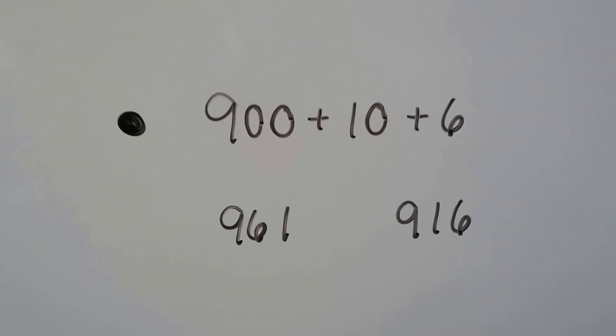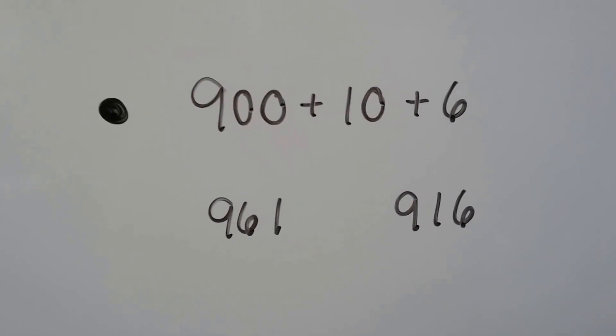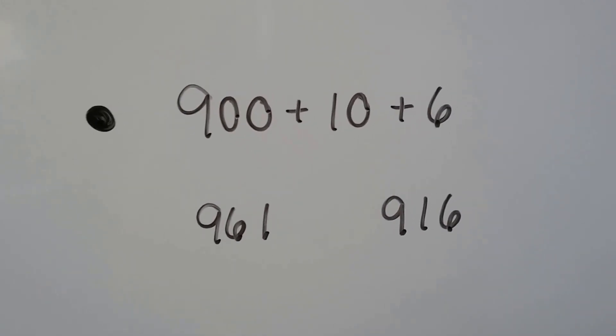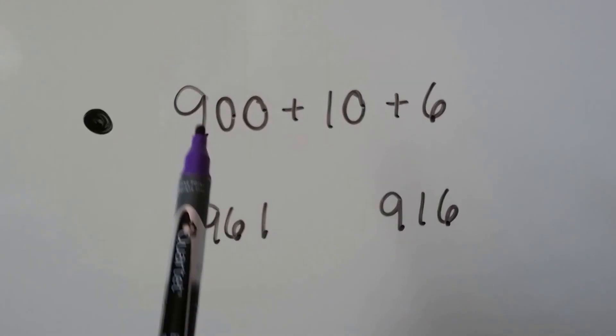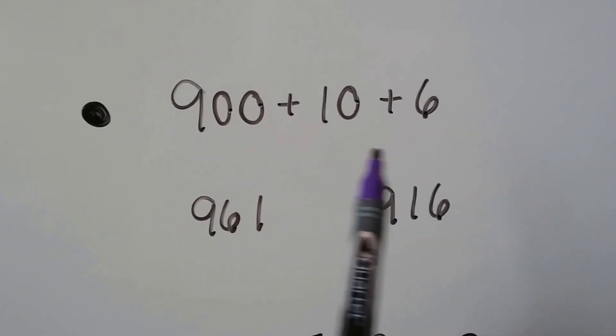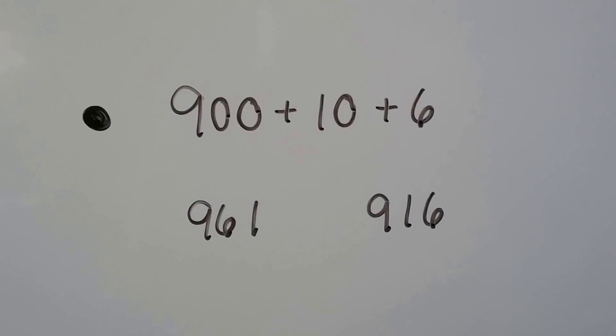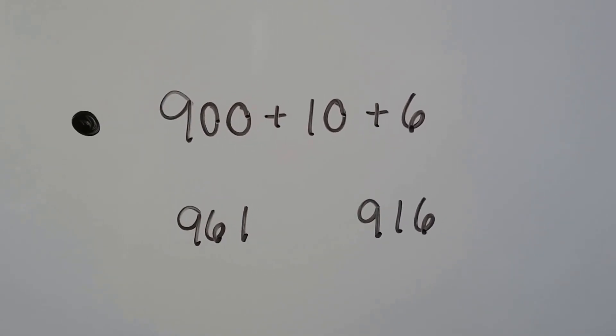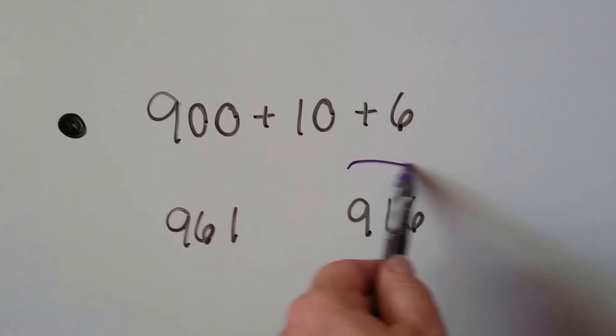Let's try this one. We have 900 plus 10 plus 6. We have a 9 in the hundreds place, a 1 in the tens place, and a 6 in the ones place. Do you know which one it is? If you said this one, you're right.